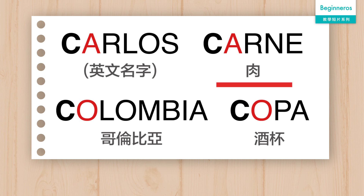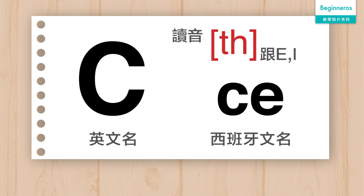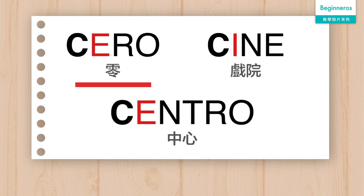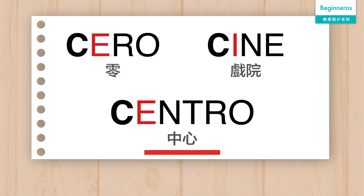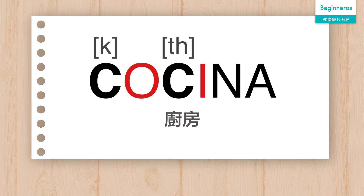如果 C 後面跟著的是 E 或者 I，它的讀音就好像英文的 S 音。例如 Cocina，第一次 C 跟著是 O，所以它變成 K，而第二次 C 跟著是 I，所以它會發 S 音，所以整個字應該是 Cocina。